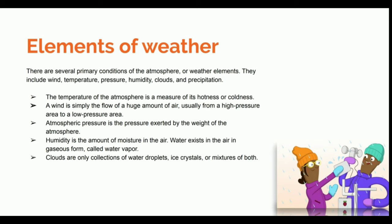Atmospheric pressure is, just as the name suggests, the pressure exerted by the weight of the atmosphere. Humidity is the amount of moisture in the air. Water exists in the air in gaseous form called water vapor, so simply put, humidity is the amount of water vapor present in the air. Clouds are the collection of water droplets, ice crystals, or mixtures of both.